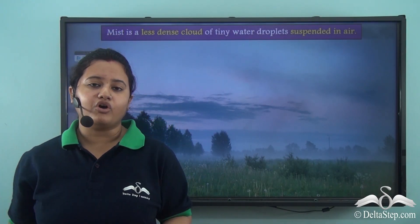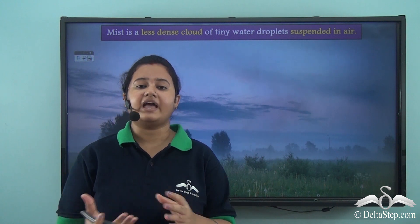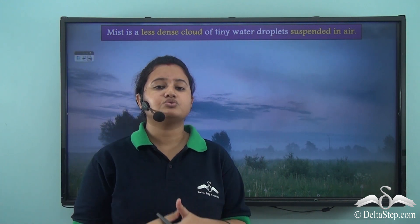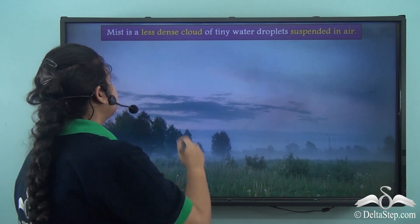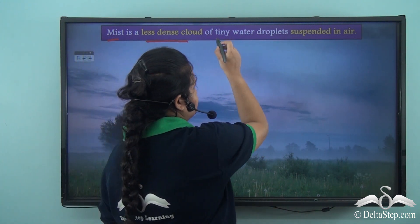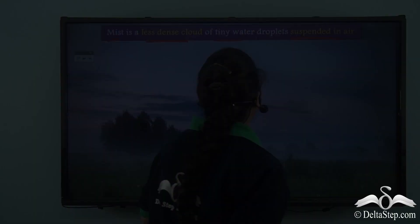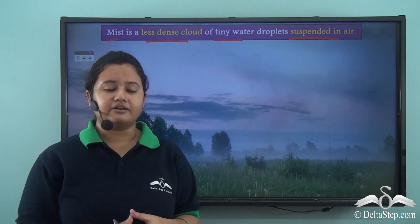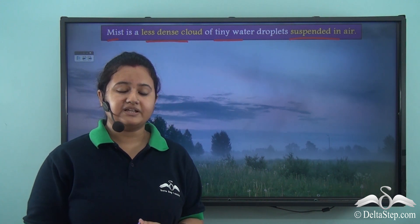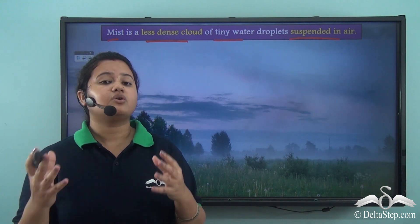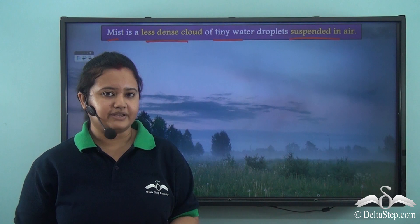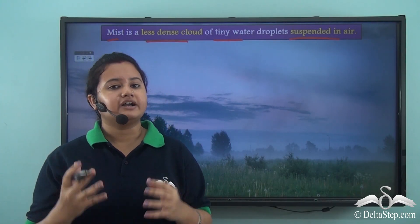Fog is very dense and hardly anything is visible through it. Sometimes if the visibility is greater than 1 to 2 km, it is known as mist. Mist is a less dense cloud of tiny water droplets suspended in air. Mist is formed in a similar manner as fog — due to condensation of water vapour into water droplets when warm moist air mixes with cold air. The only difference between mist and fog is that visibility is greater in the case of mist.